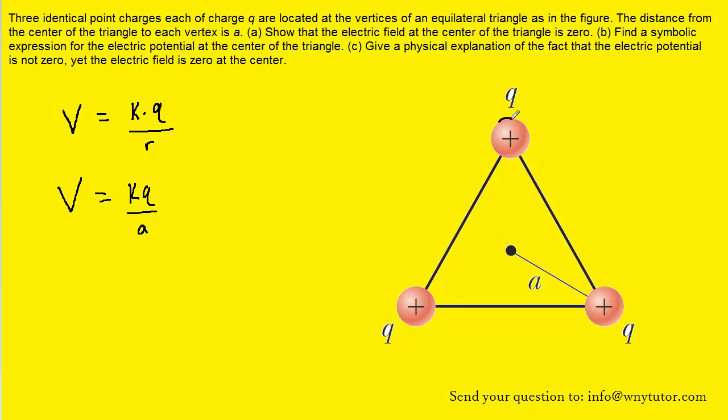Now, in fact, that's going to be true for not just this charge, but also this charge and this charge. So the total, which we can symbolize by sigma V, would simply be this expression added together three times. Or you could just multiply it by three.